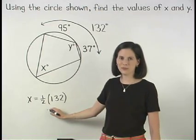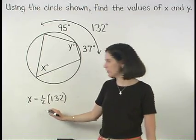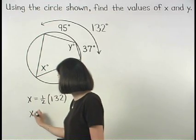One half times 132 is 66, so x equals 66.